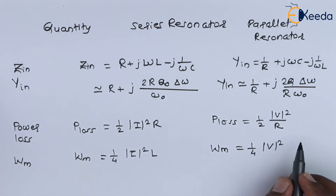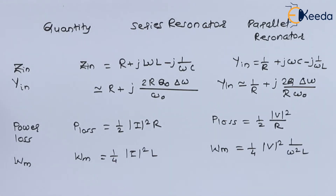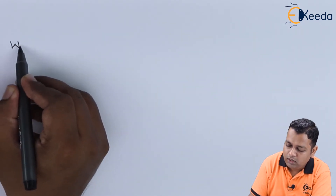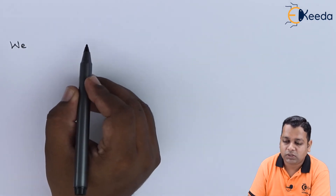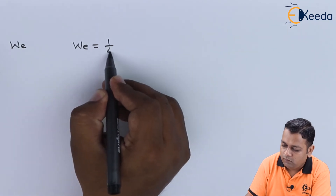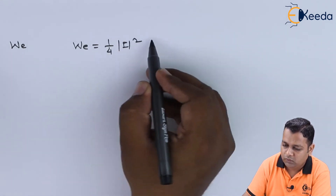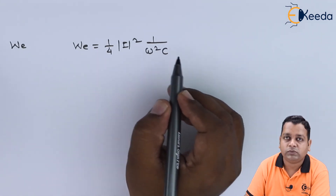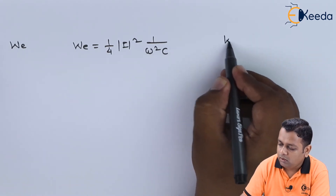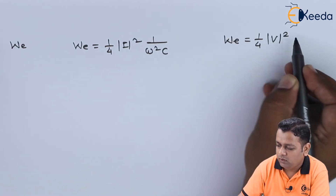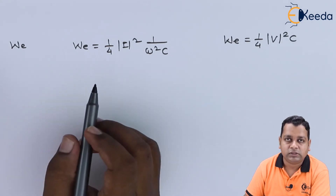For electric energy storage W_E: the series resonator gives W_E = (1/4)|I|²·(1/ω²C), while the parallel resonator gives W_E = (1/4)|V|²·C, since the capacitor stores electric energy.